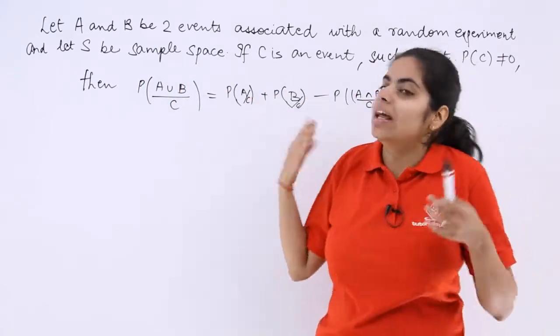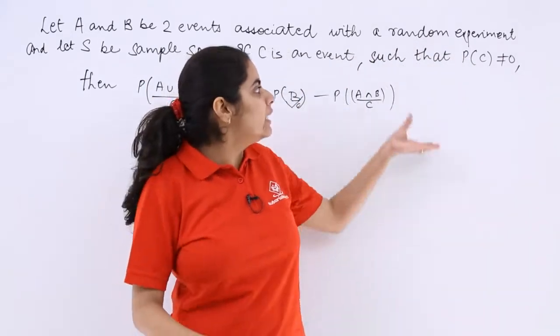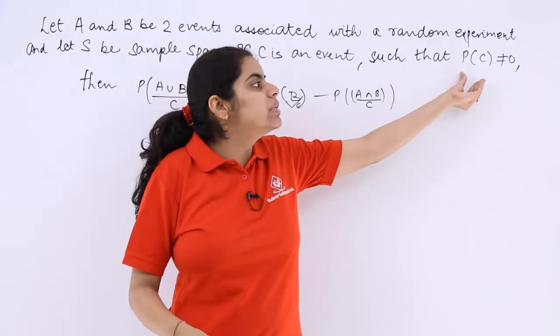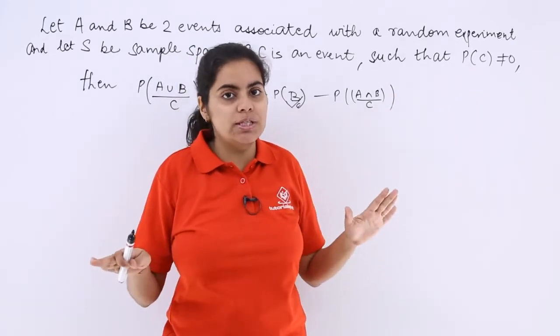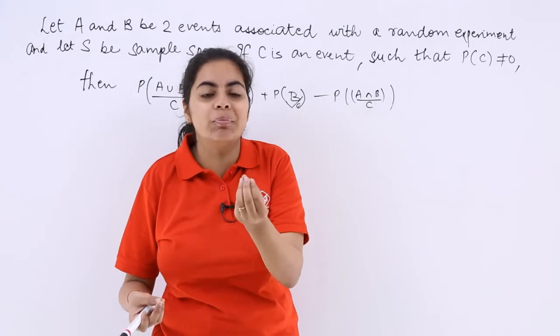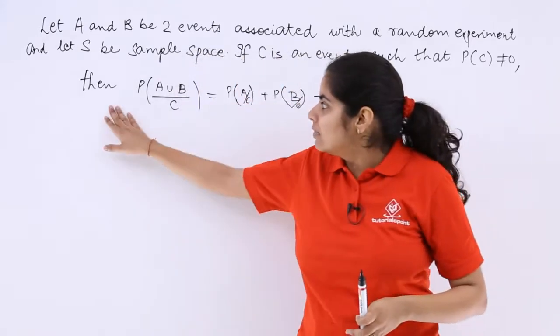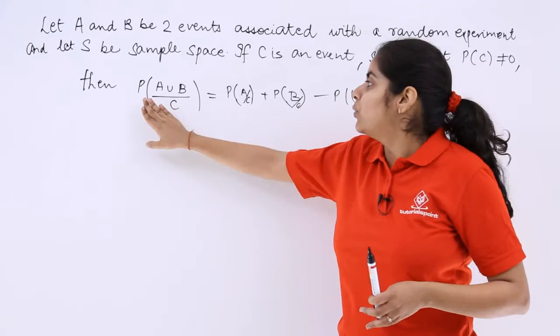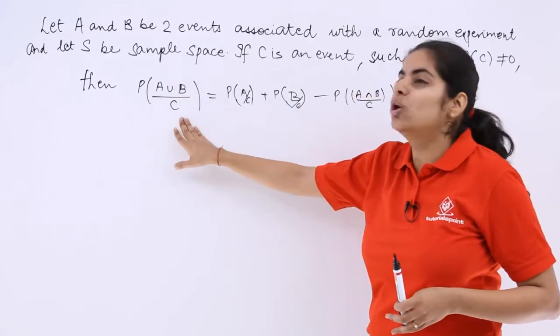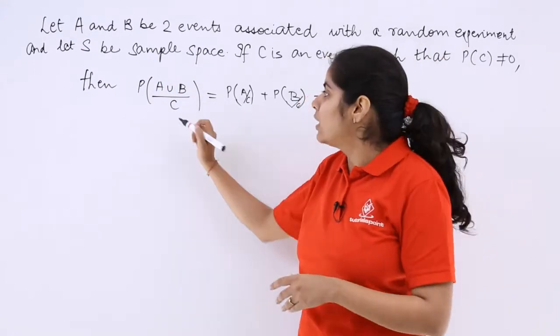If C is another event or if C is an event such that probability of C is not equal to 0, it might be 0.1 but it cannot be 0, then this is the theorem which is useful. So probability of A union B whole over C is equal to what?